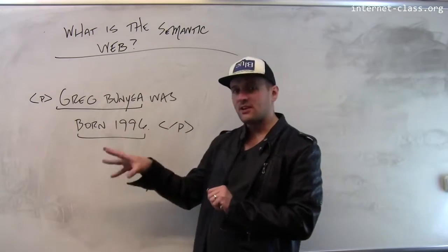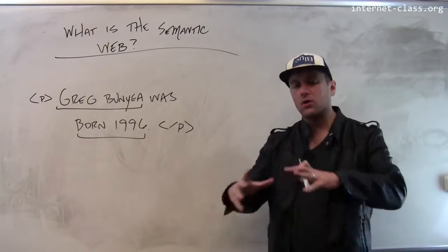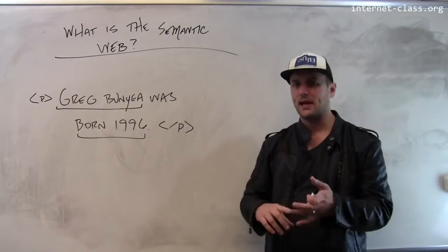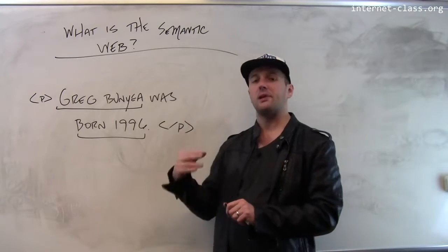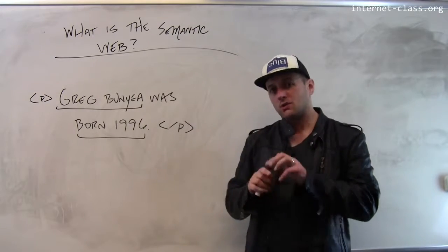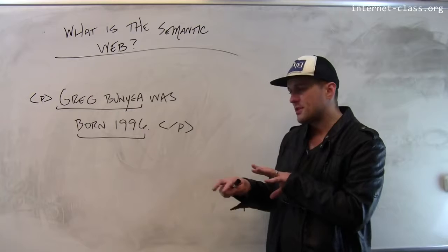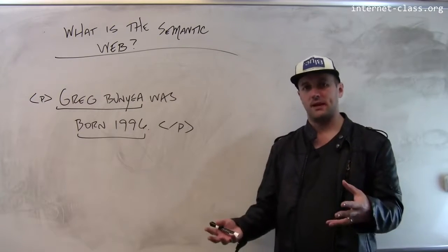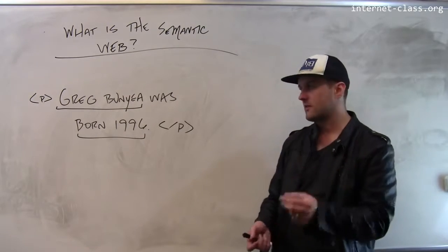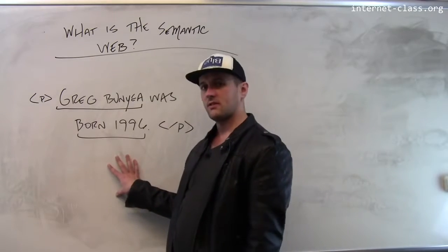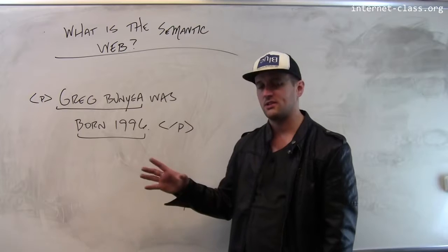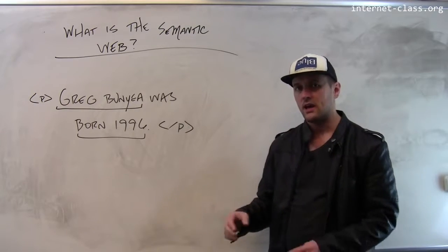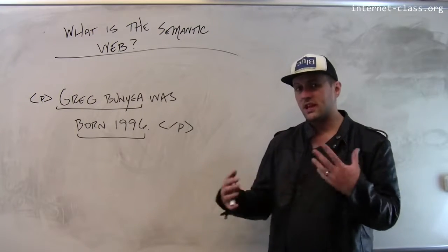The net effect of this, if you imagine if I took all of the information that's online on Wikipedia, on personal web pages, on Facebook and things like this, and I applied all of these semantic web standards, what the web starts to become is almost this huge distributed database. Because databases are about storing structured information. And what I'm doing with the semantic web is I'm using these new markup tools to better structure the information that's present on my web pages. And so the web becomes this huge database.